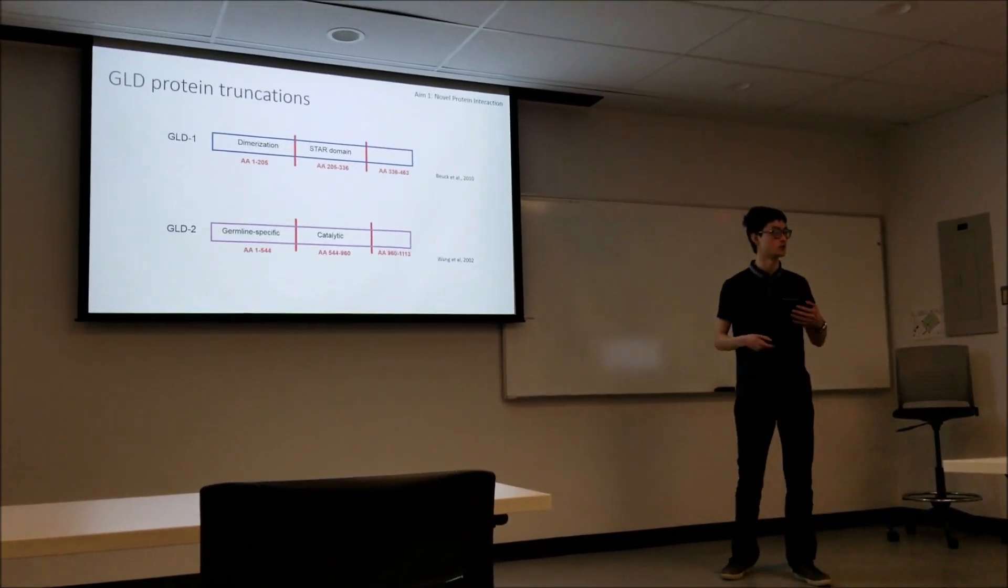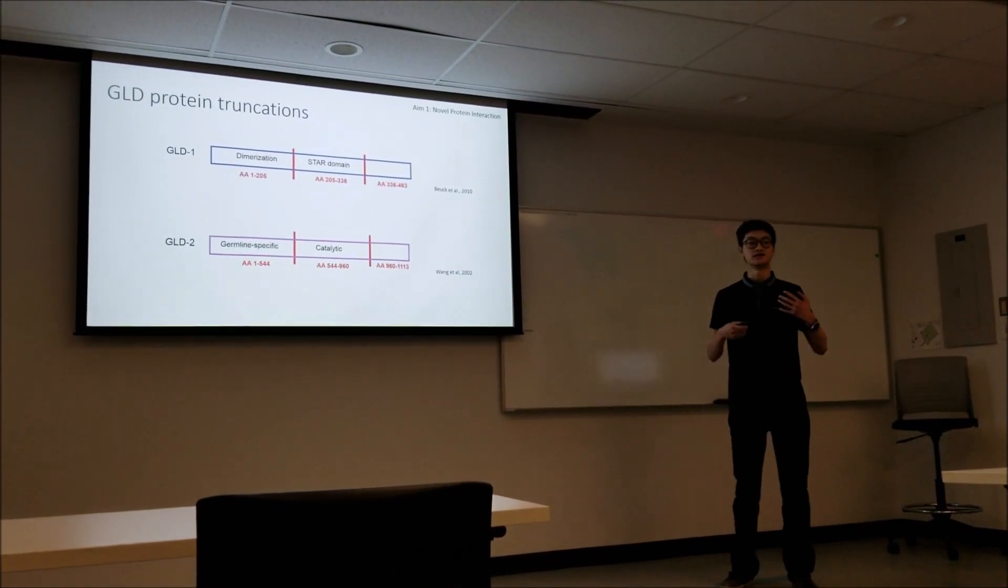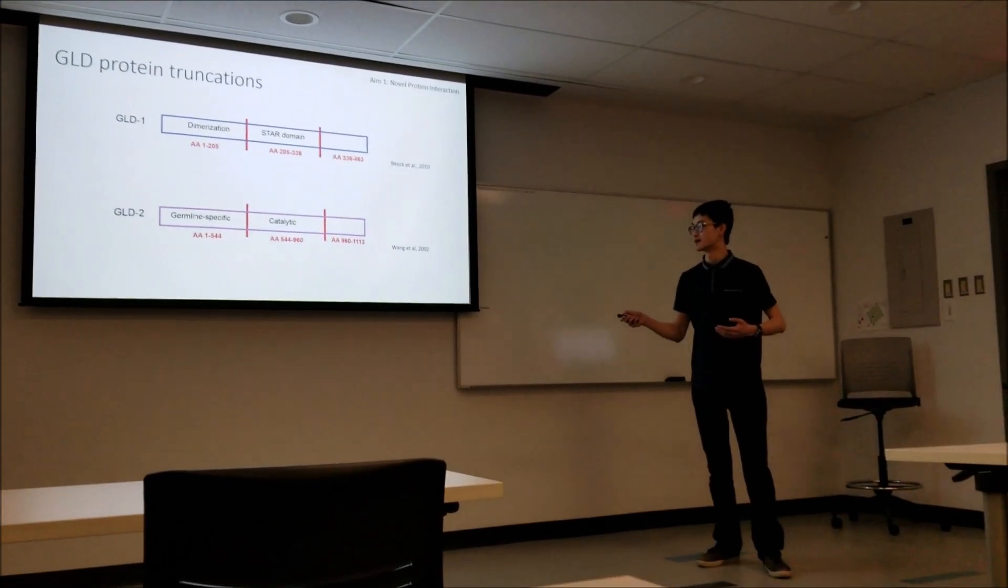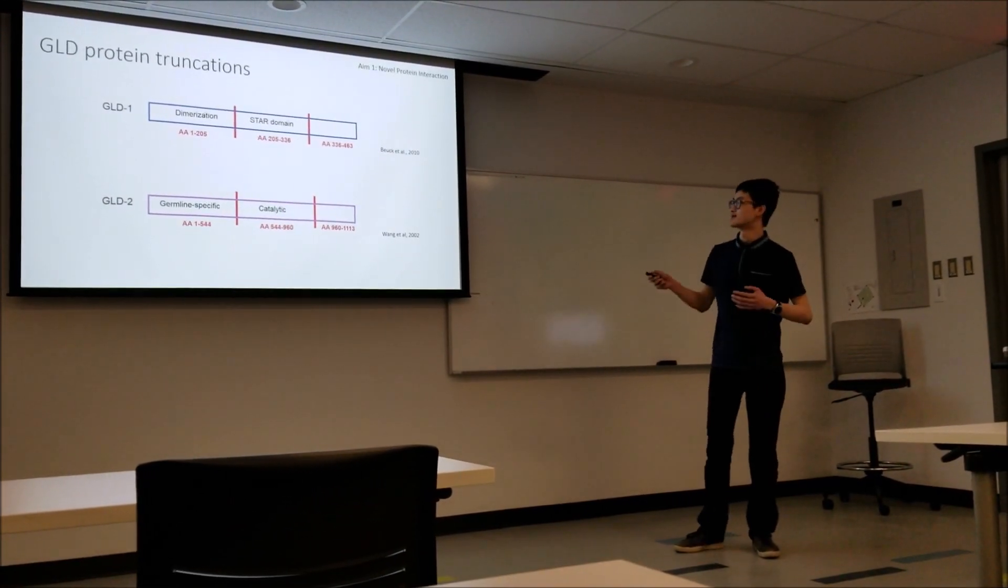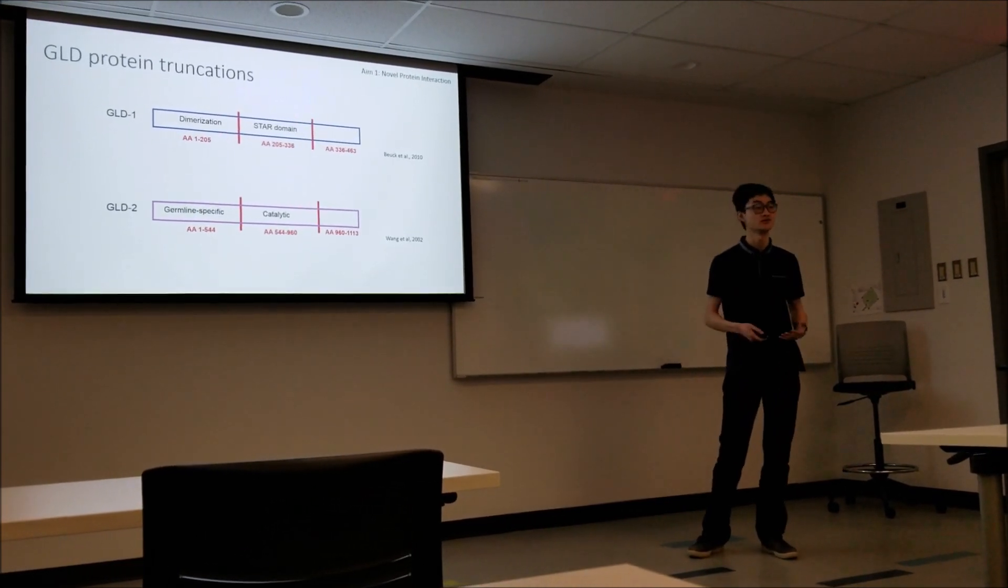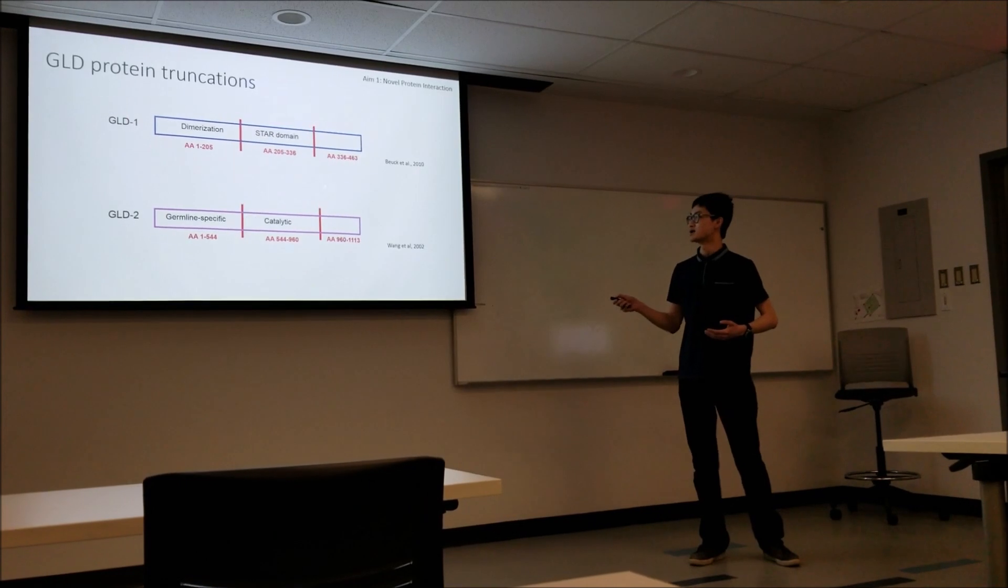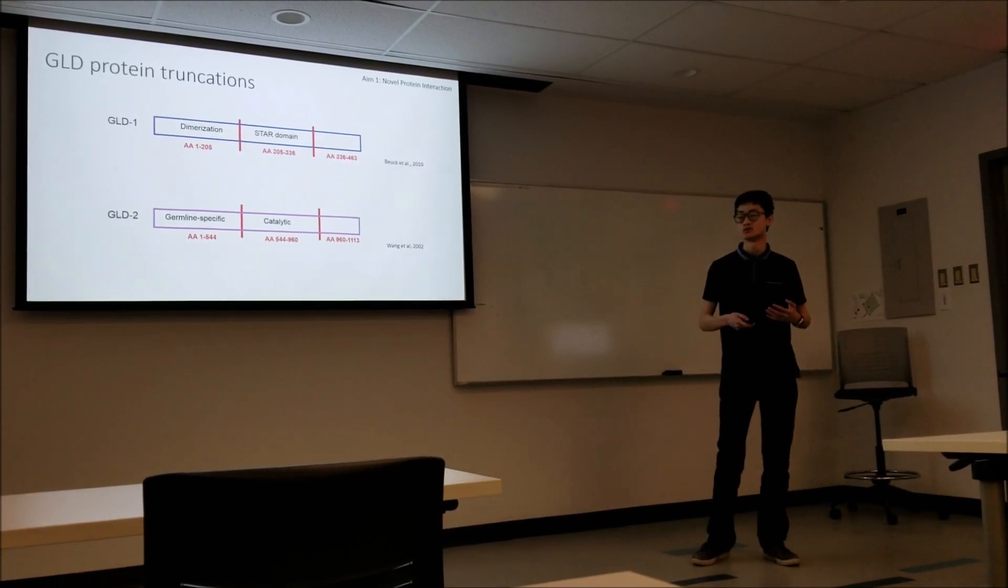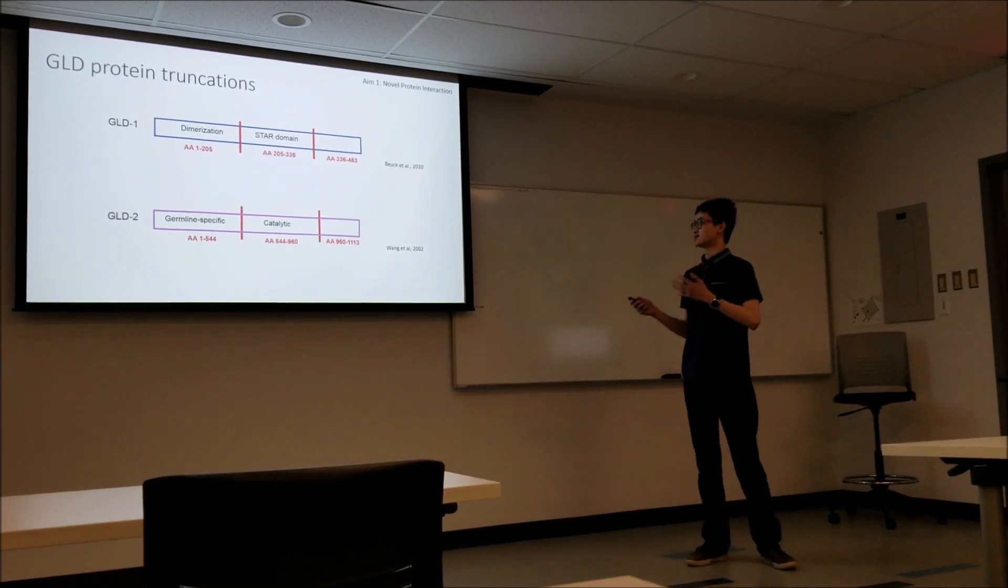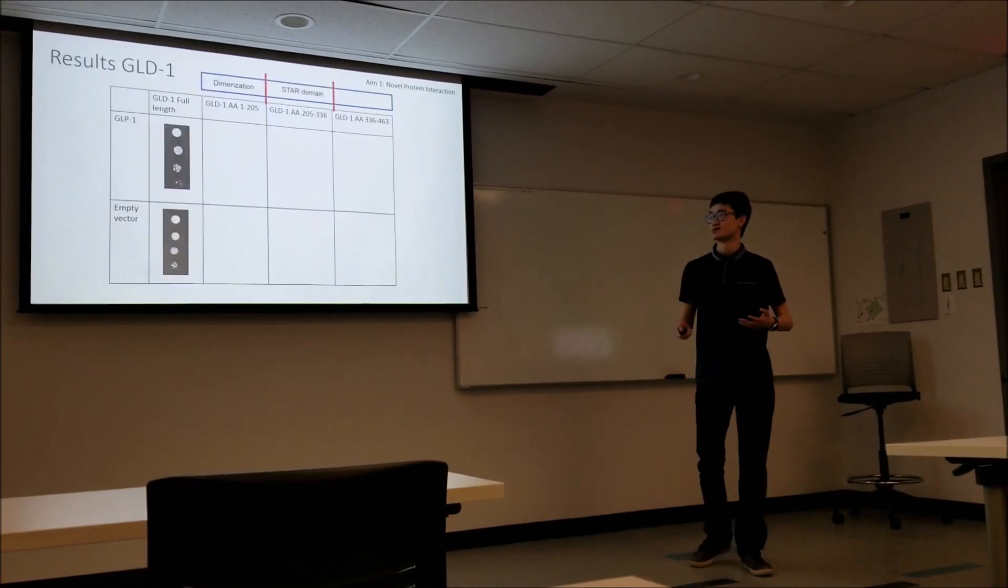The last thing you need to know before I get to my results is how do I select how to make those protein truncations. Here I have a schematic of GLD1 and GLD2, those two proteins. I've taken each and chopped them into three based on what was previously found in the literature. Here I've highlighted some important domains, which may or may not be important later. Spoiler alert, they will be important later.